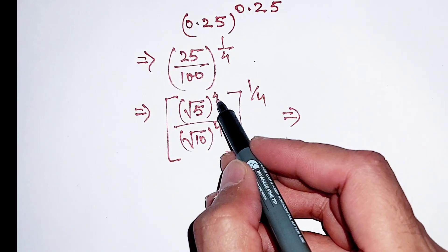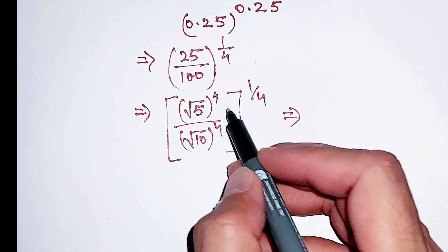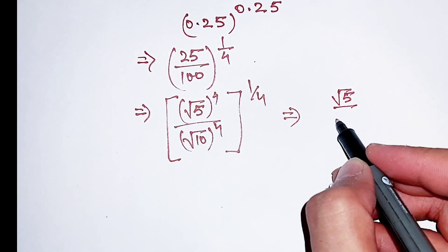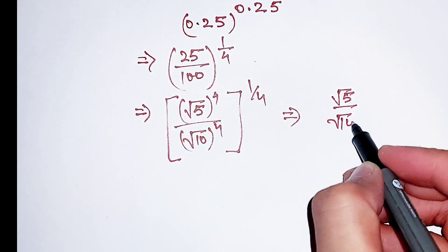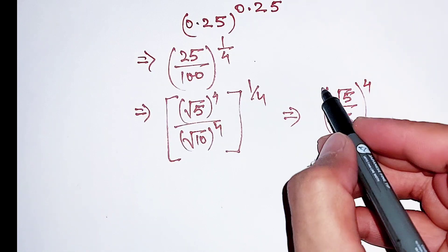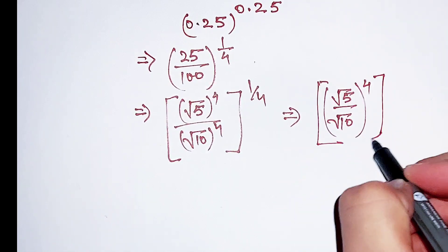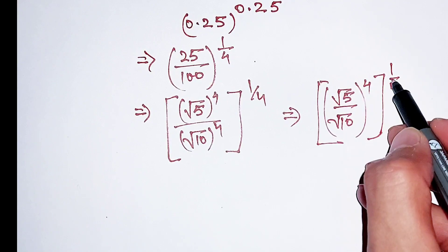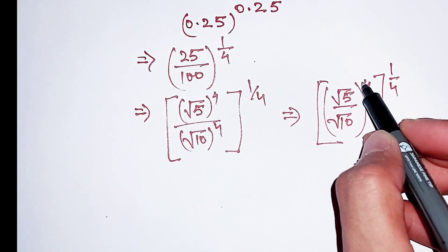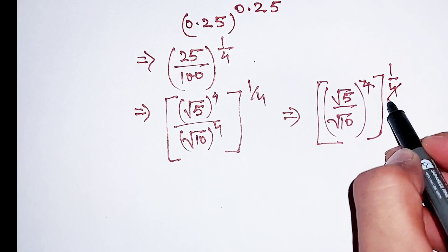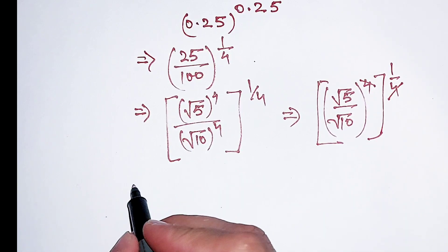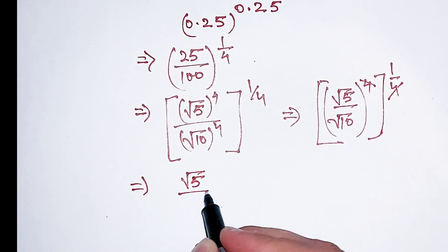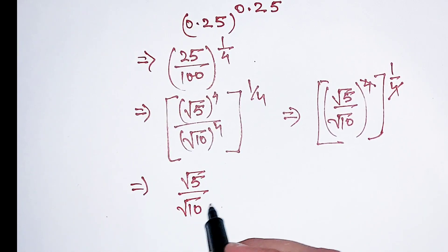Here the numerator power and denominator power are the same, so this can be written as a common power over numerator and denominator, with the whole power 1 divided by 4. Since these are in multiplication, this 4 can cancel out that 4, and now what we get is square root of 5 divided by square root of 10.